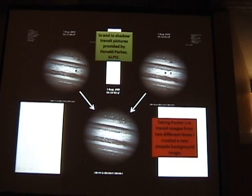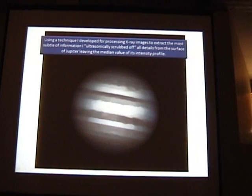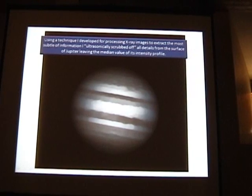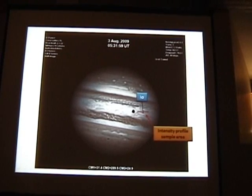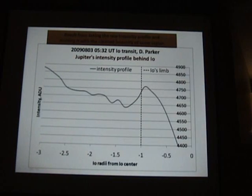And I did. I created a pseudo background image by projecting the max signal from two images, which removed the two moons — giving me a subtraction result. Using a technique from my x-ray imaging work, I scrubbed off all the detail to come up with a median intensity trend of the background of Io. Then when I took an intensity sample from one of the original raw images and divided it by the scrubbed image, I see off to the limb of Io an extinction trend as you get closer to the limb.